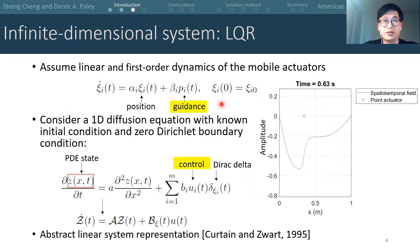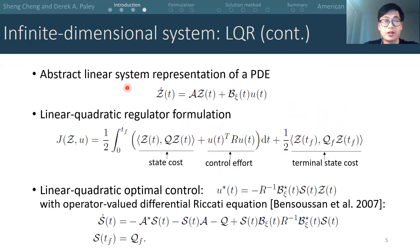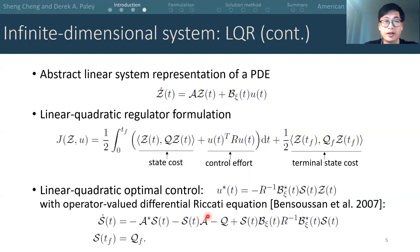Here, we want to emphasize the difference between guidance and control. Guidance steers the dynamics of the mobile actuators, while control refers to the actuation input to the PDE. Now, with the linear system representation at hand, even though the state space is infinite dimensional, we can derive a linear quadratic regulator just like its finite dimensional analogy. The cost function is quadratic in the PDE state and control, with possibly a terminal cost of the state. A feedback optimal control can be synthesized with a solution of the differential Riccati equation that is operator valued.